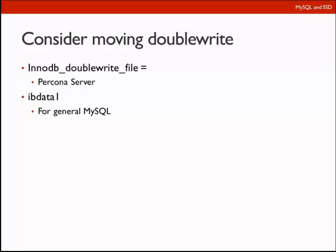Next question: how does Flash compare with memcached in the context of low latency requirements? It comes down to what latency Flash can provide. Flash offers microseconds latency while memory offers nanoseconds. Memcached, working with memory, can obviously provide better response time than data stored on Flash.